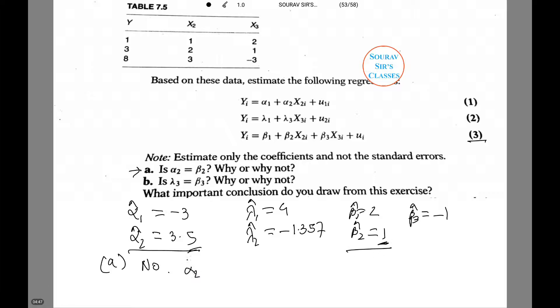That is we write alpha 2 is a biased estimator of beta 2 cap.